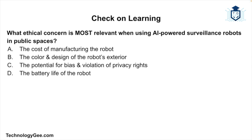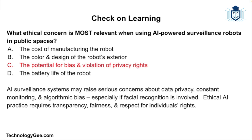Question three: what ethical concern is most relevant when using AI-powered surveillance robots in public spaces? The correct answer is: the potential for bias and violation of privacy rights. AI surveillance systems may raise serious concerns about data privacy, constant monitoring, and algorithmic bias — especially if facial recognition is involved. Ethical AI practice requires transparency, fairness, and respect for individuals' rights.